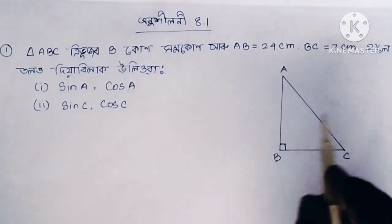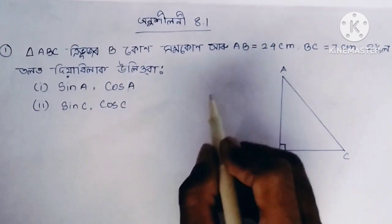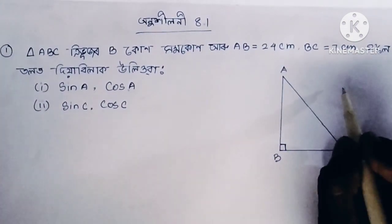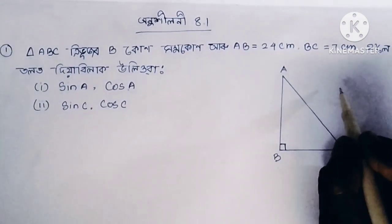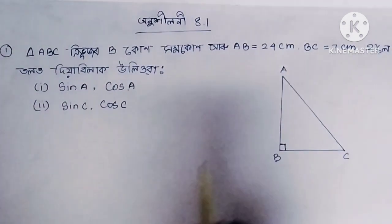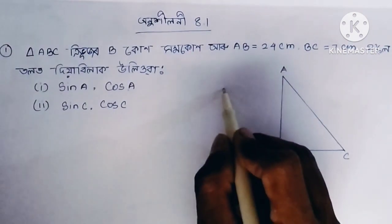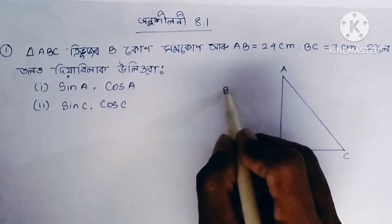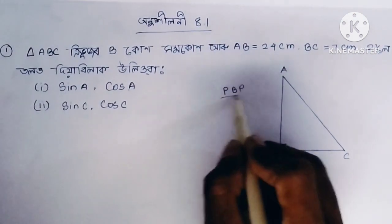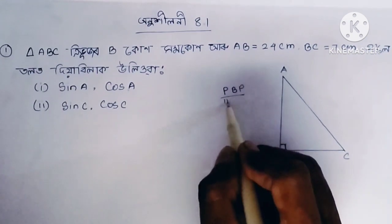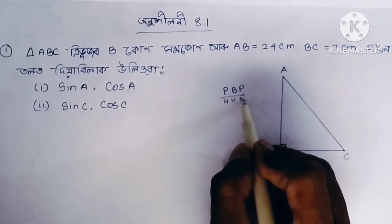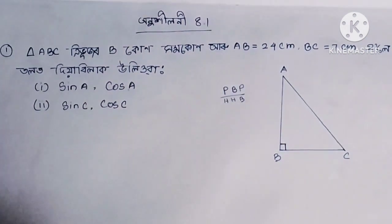I have to write the formula. This is how the formula is written — P by H. This is the sine formula.